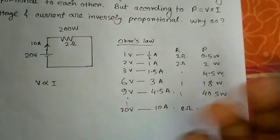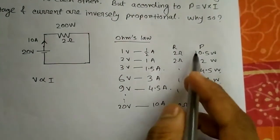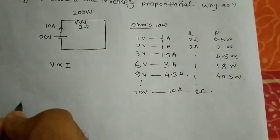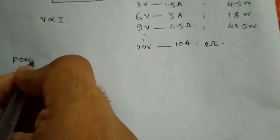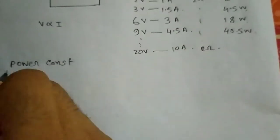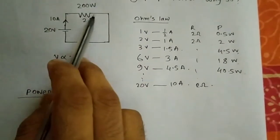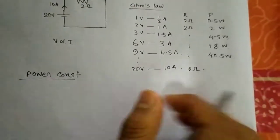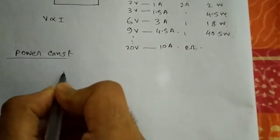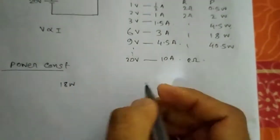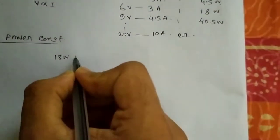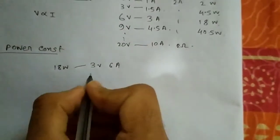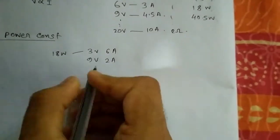But the power will be different. Now in practical scenarios, what happens? The power is constant. In this case, we are choosing a resistance which has a particular power, let's say 18 watts. Now in how many ways can you make this 18 watts? You can make it in different ways: you can take 3 volts and 6 amperes, or you can take 9 volts and 2 amperes, or you can take 18 volts and 1 ampere.